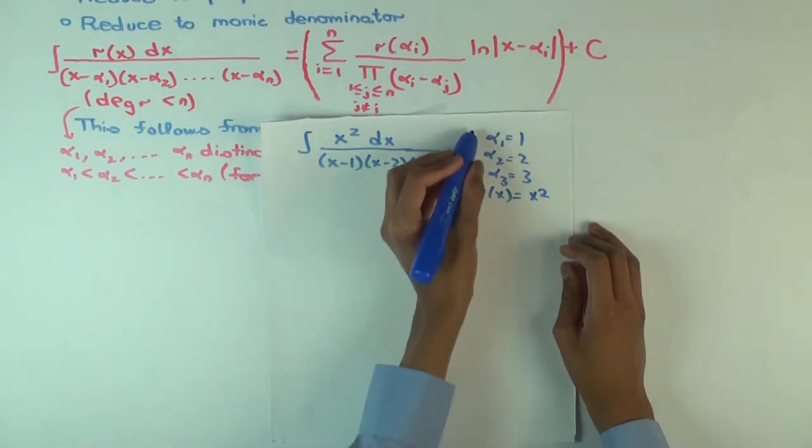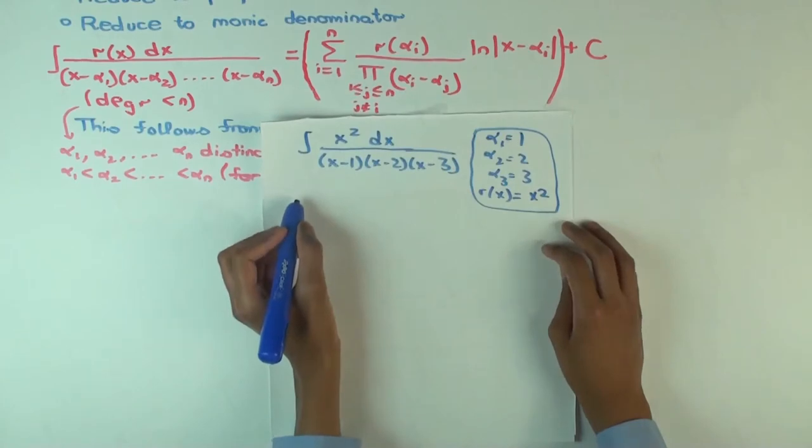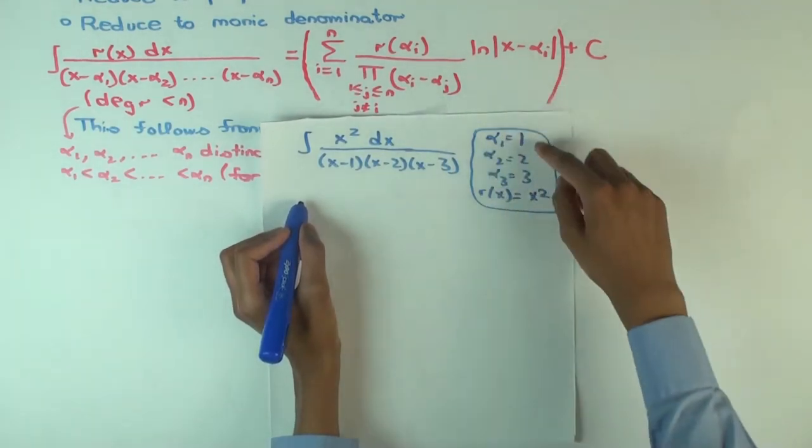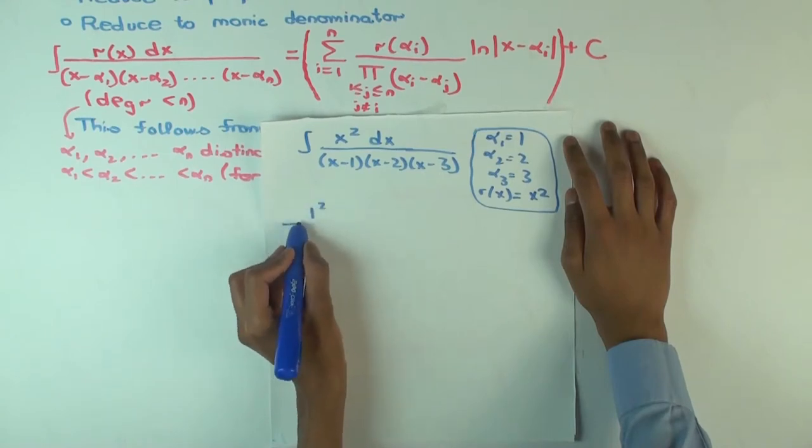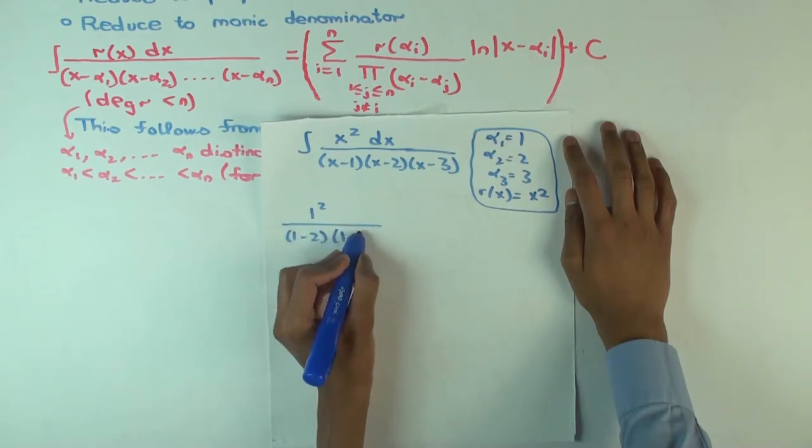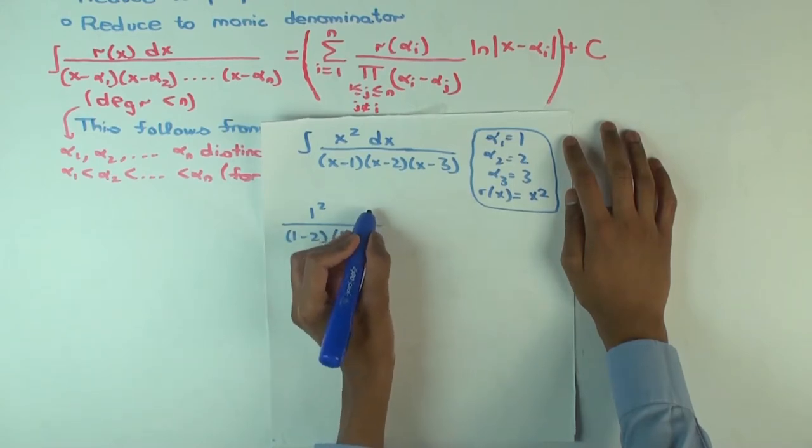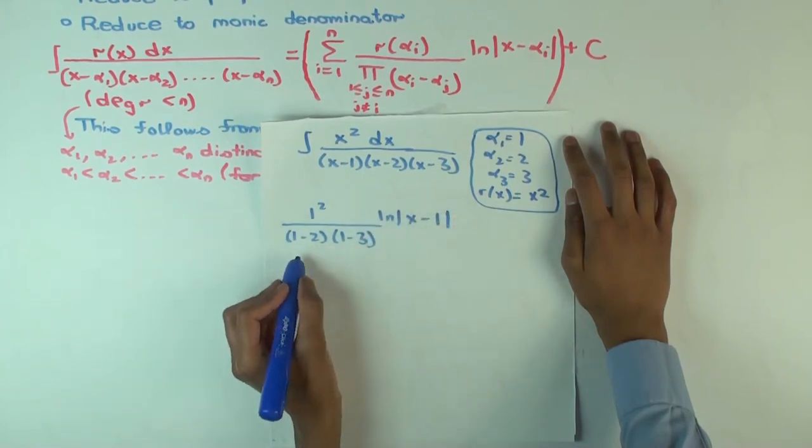So let's just do this. So what's the first thing in the summation, the thing for the factor alpha 1? What do we get? 1 squared over (1 minus 2) times (1 minus 3) times ln of x minus 1.